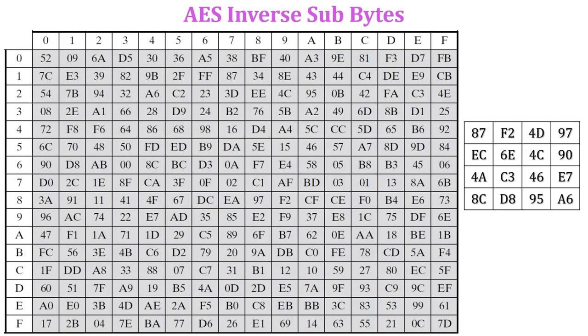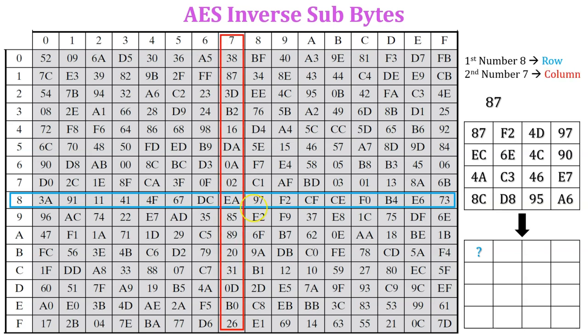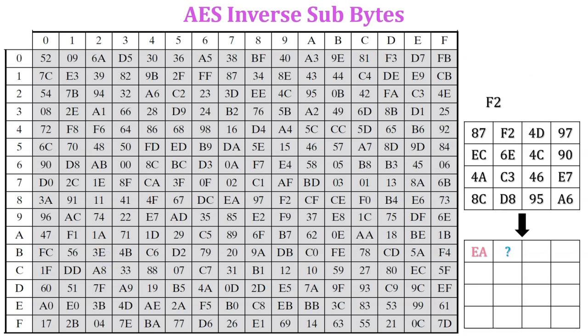Let's find the first element of the matrix. Here the first element is 87. In this value, 8 indicates the row and 7 indicates the column. So here 8 and 7 intersect at the value EA. It means value 87 is replaced with EA. Let's find the next element of the matrix.